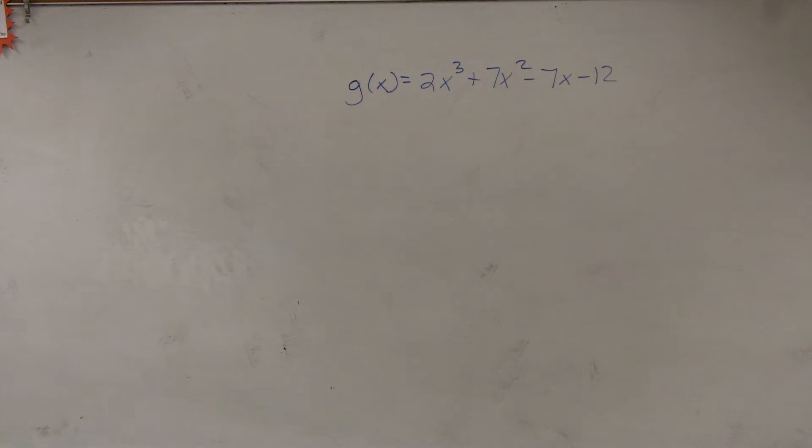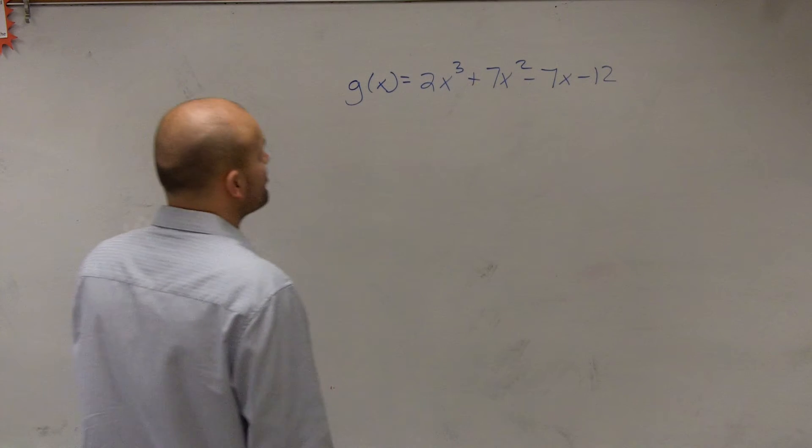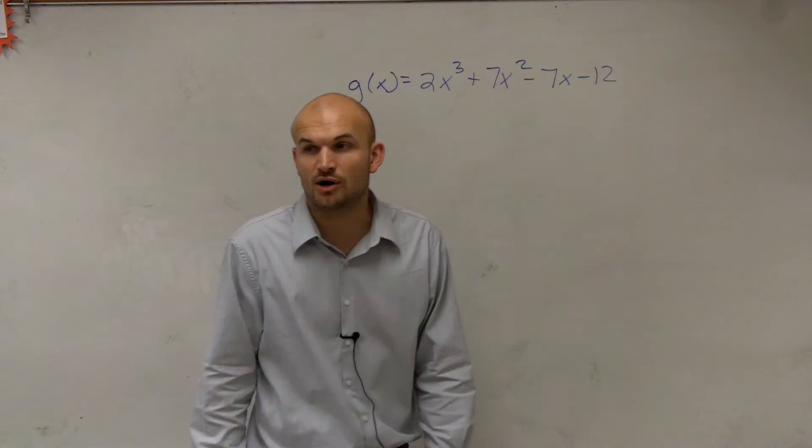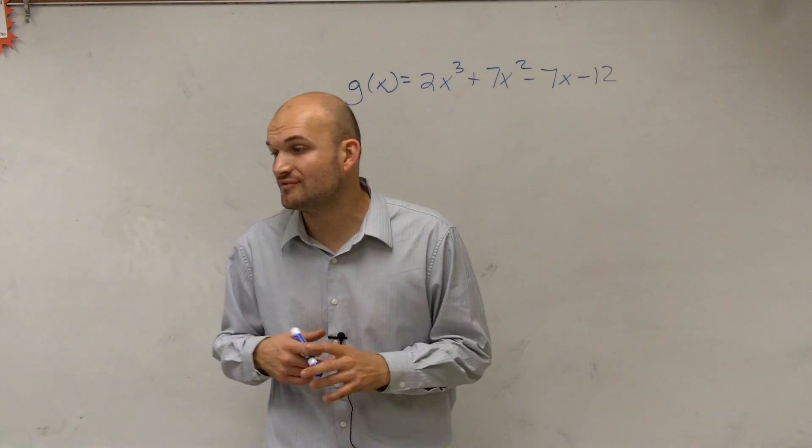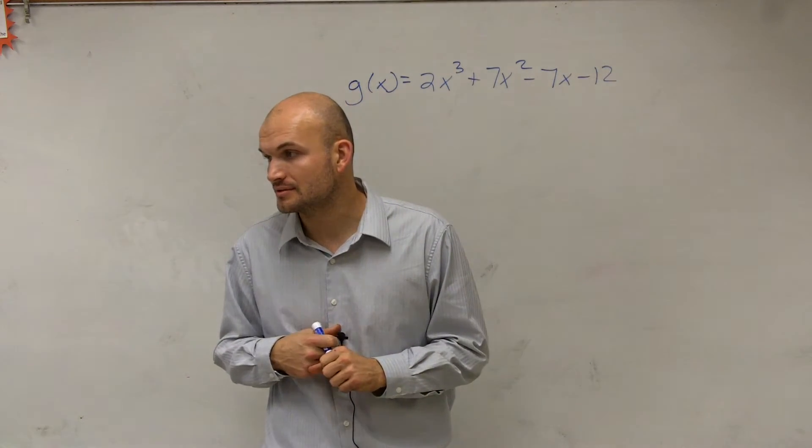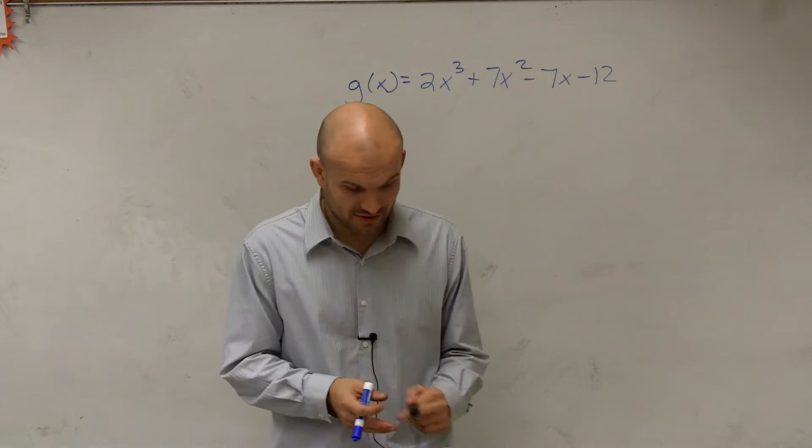Alright. So in this problem, it says g of x equals 2x cubed plus 7x squared minus 7x minus 12. It asks us to find all of the zeros. So we need to find all of the zeros for this problem.